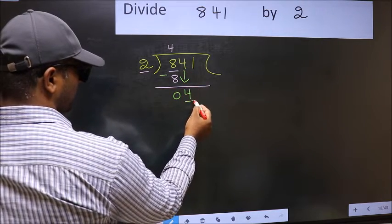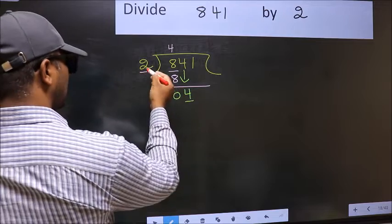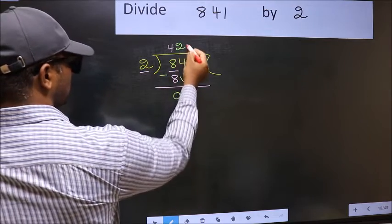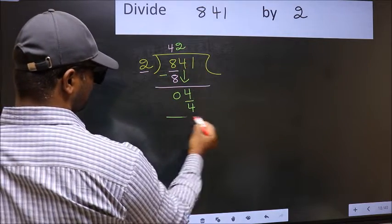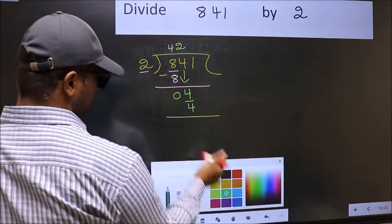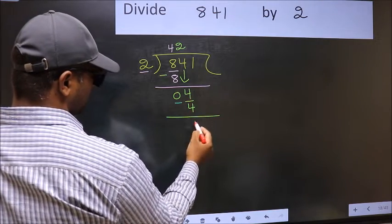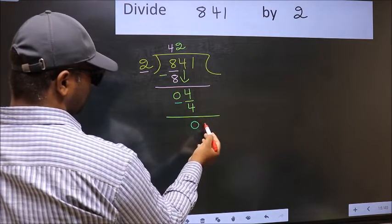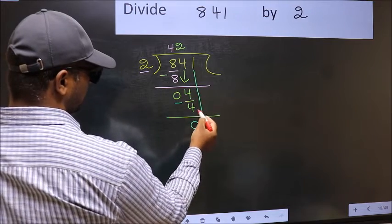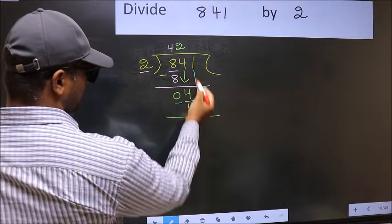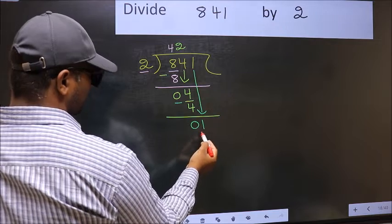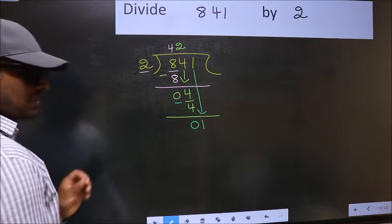4 down. Now 4, when do we get 4 in the 2 table? 2 twos are 4. Now you should subtract 4 minus 4 equals 0. After this, you should bring down the beside number, so 1 down. After this step, the mistake happens.